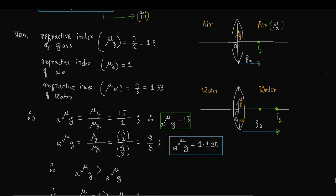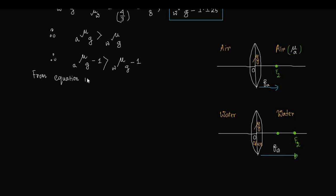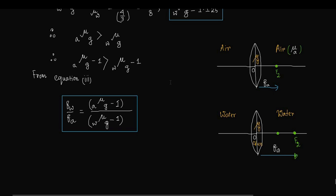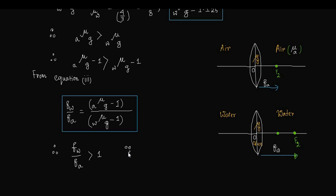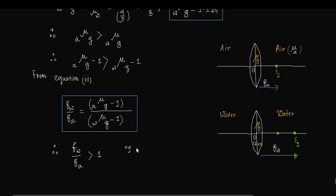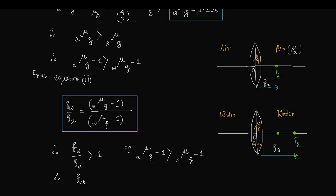Therefore, (a_mu_g − 1) > (w_mu_g − 1). From Equation 3, Fw/Fa > 1, which means Fw > Fa.